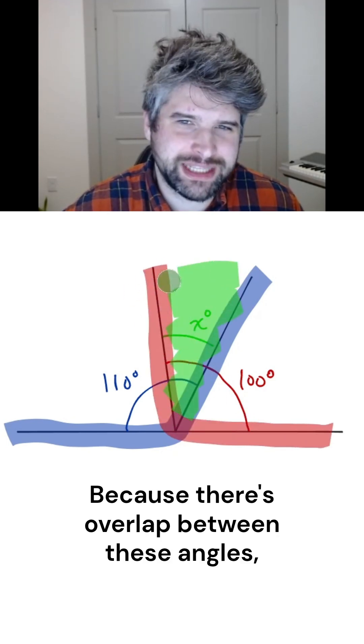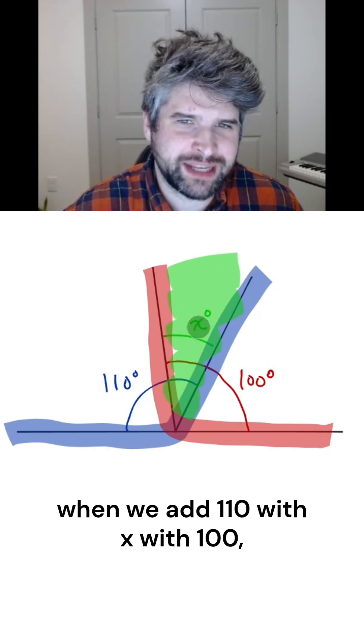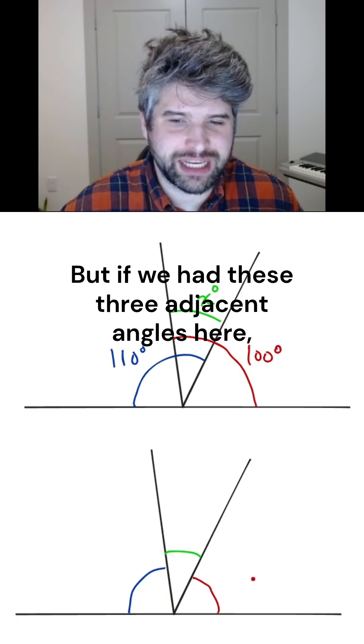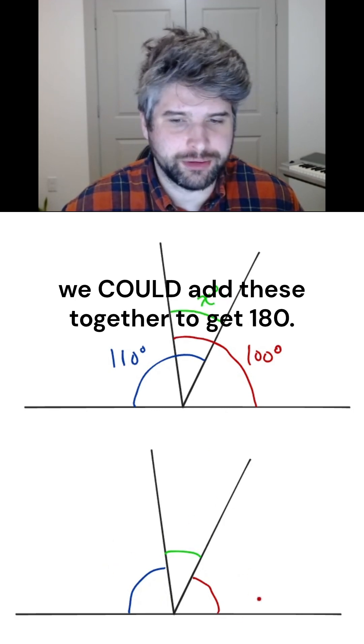Because there's overlap between these angles, when we add 110 with x with 100, we're going to get more than 180. But if we had these three adjacent angles here, we could add these together to get 180.